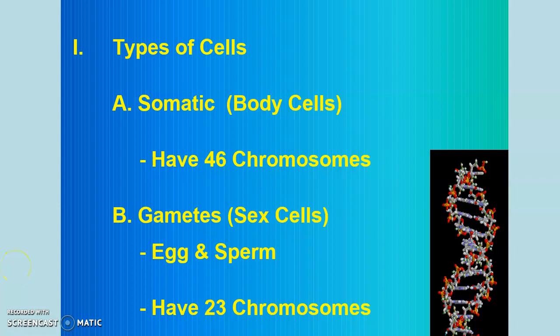Okay, so let's get started here. This is Mr. Adolph, and we're going to pick up right where we left off with cell division. We are organisms that are made of cells. We're made of trillions of cells, and that's a hard number to even wrap your head around because who's seen a trillion of anything? But we're made of trillions of cells.